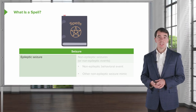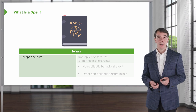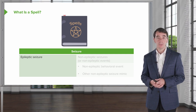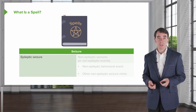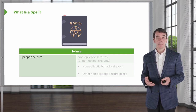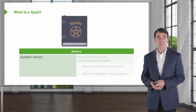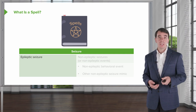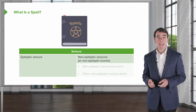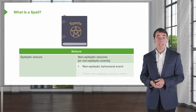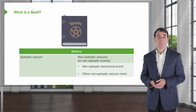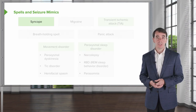Before arriving at a diagnosis of seizure, we start with the patient's clinical description of the event — the spell. In medicine, a spell describes a paroxysmal event of altered brain function. Spells may be epileptic in origin or non-epileptic. Our first job as a clinician is to determine whether the spell is epileptic — a seizure — or non-epileptic. Non-epileptic events may be non-epileptic behavioral events, a functional diagnosis, or a seizure mimic.